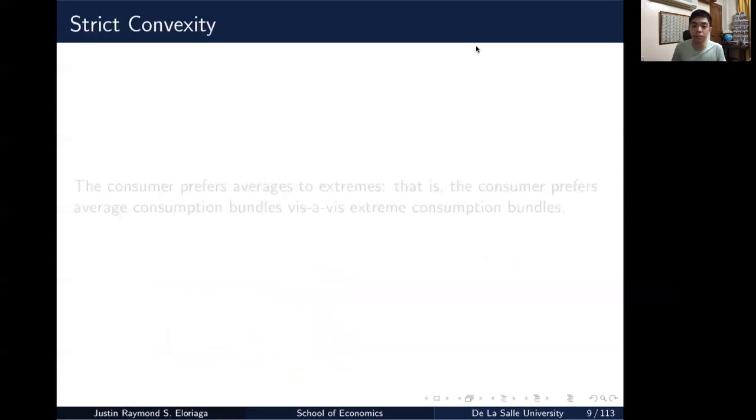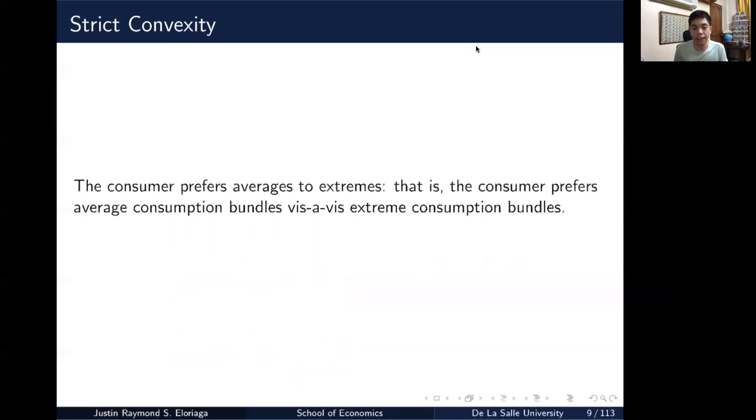The last axiom of consumer preferences is a little bit trickier but I think nevertheless relevant and that is strict convexity. And according to strict convexity, the consumer prefers averages to extremes. That is the consumer prefers average consumption bundles versus extreme consumption bundles.